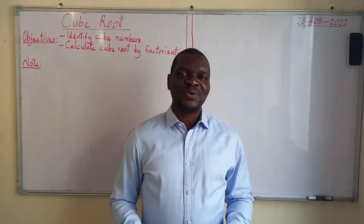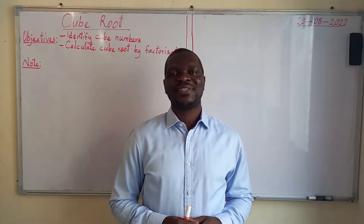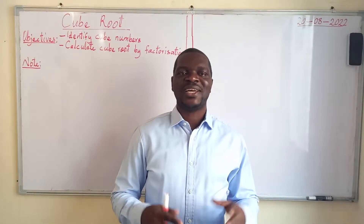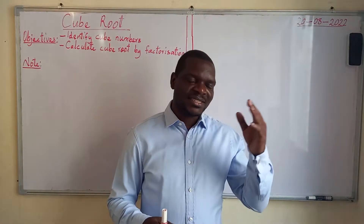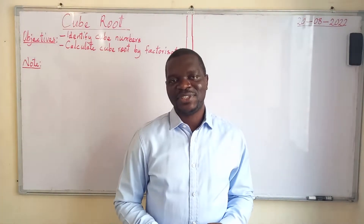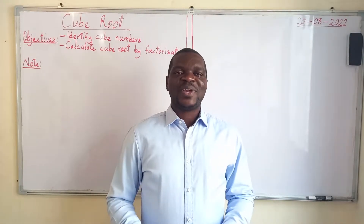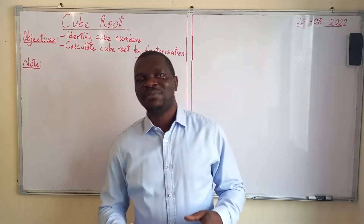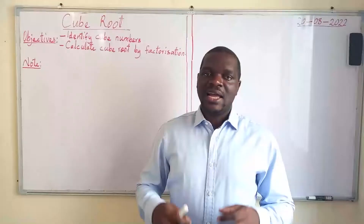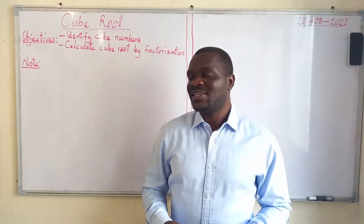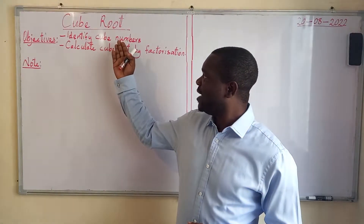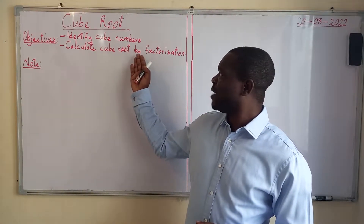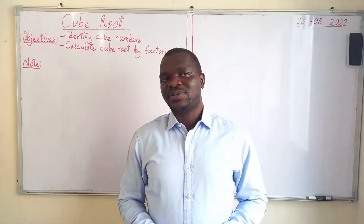Last time we looked at square roots and square numbers, and in that topic we identified two ways to calculate the square root of given numbers: the prime factor method and the division method. Today we have something new — as written on the board, we shall be discussing cube roots. The objectives of our lesson are first to identify cube numbers, then to calculate a cube root by means of factorization.